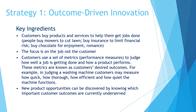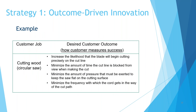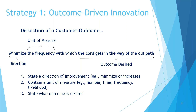The focus is on the job, not the customer, and the customer uses a set of measures to judge how well it's getting done — we call those the desired outcomes. For example, judging a washing machine, you might measure how quick it is, how efficient or how quiet the machine is. For a circular saw, the job people are trying to get done is typically cutting wood. The outcomes include increasing the likelihood of cutting precisely on the line, minimising the time it takes, minimising the pressure they have to exert, and minimising the frequency in which the cord gets in the way of the final cut path. These are things you can identify by talking to your customers.